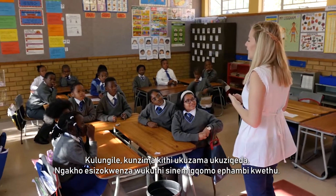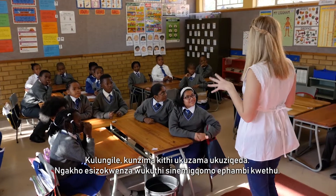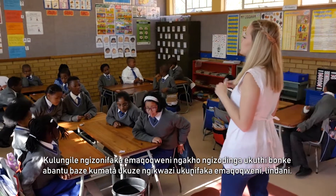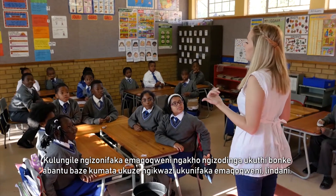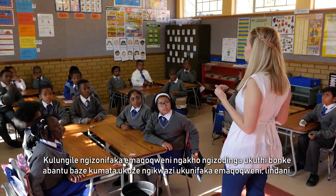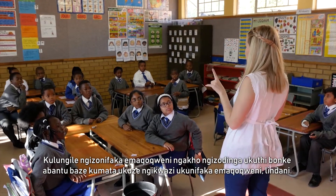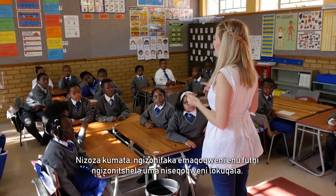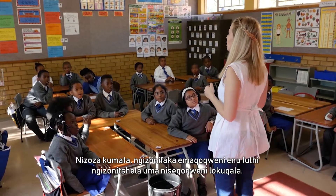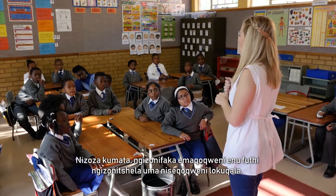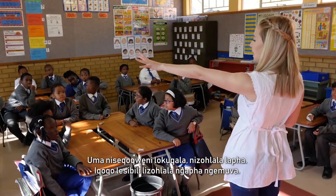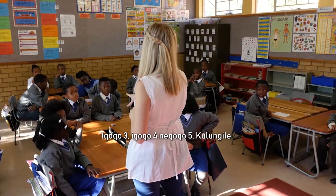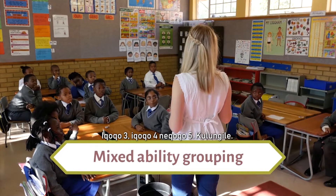So what we're going to do is we have got dustbins in front of us. I'm going to put you into groups. I need everyone to come to the carpet so that I can put you into your groups. If you're in group one, you'll sit there. Group two will sit at the back there. Group three, group four and group five.